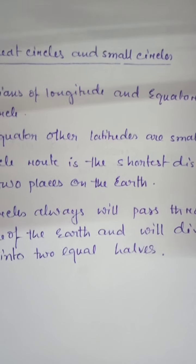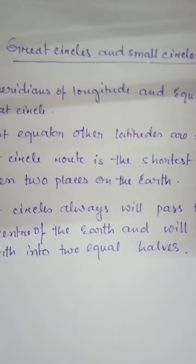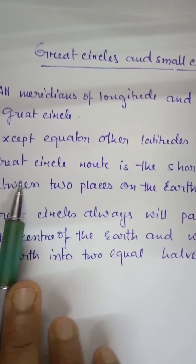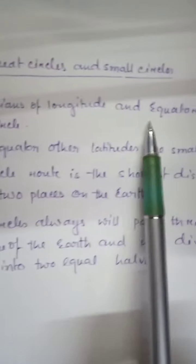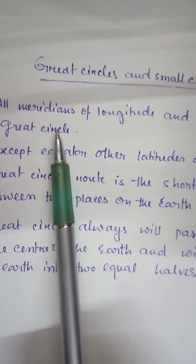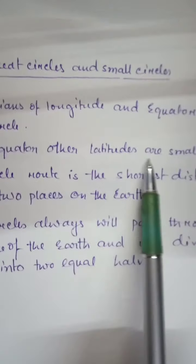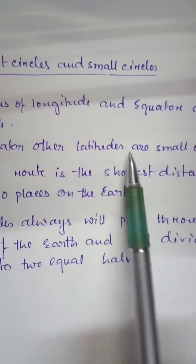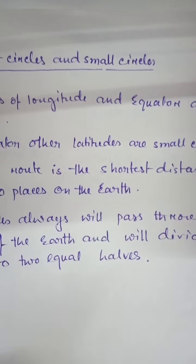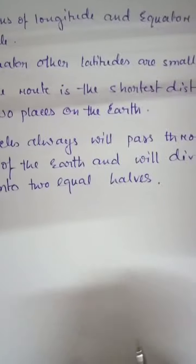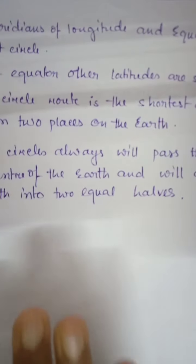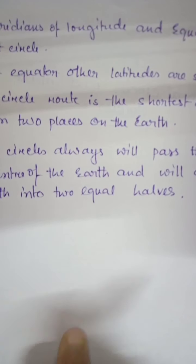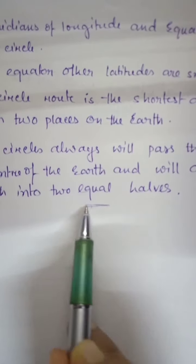Now children, we will learn what great circle and small circle are. I have already written some notes here to save time. All meridians of longitude and the equator are known as great circles, while other latitudes are known as small circles. The key point is that all great circles pass through the center of the Earth.